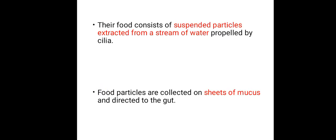Their food consists of suspended particles extracted from a stream of water propelled by cilia. The cilia helps propel water toward the organism, and the actual food that these proto-chordates feed on is suspended in that stream of water. They use their cilia to direct that stream of water, and from there they take their food. Food particles are collected on sheets of mucus and then directed to the gut.